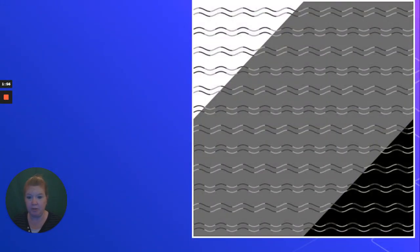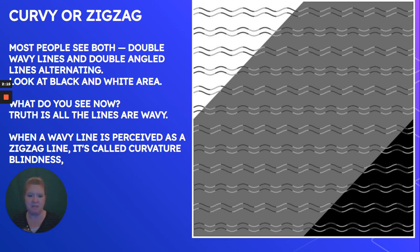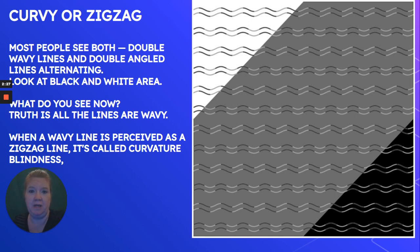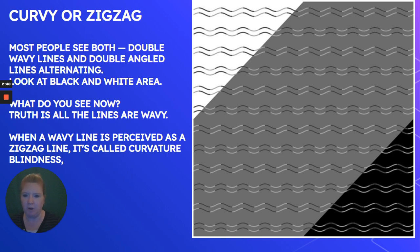Now we have this optical illusion. What do you see — do you see wavy lines or zigzag lines? Most people see both — primarily zigzag lines and then wavy lines, an alternating pattern. The truth is they're all wavy. If you use your hand to cover up and isolate each one, you will see that they are in fact all wavy. What's responsible for that illusion is something called curvature lines.